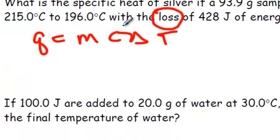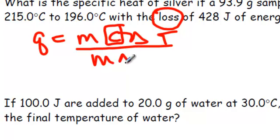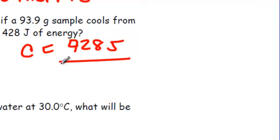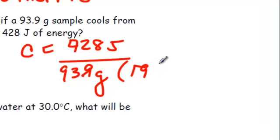So, I have to solve for C. On the previous page, we just said, to isolate C, we divide both sides by M delta T. So, C is equal to Q, which is 428 joules, divided by the mass, which is 93.9 grams, times delta T, which is 19 degrees Celsius.